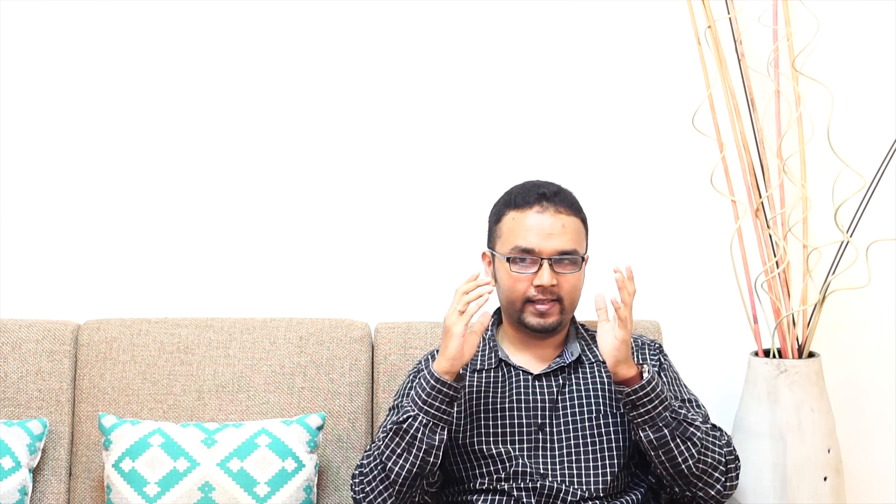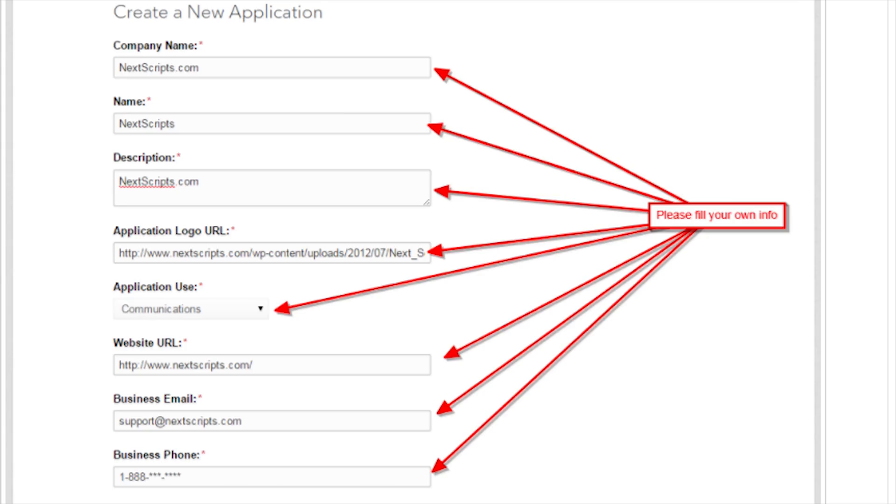So go over to the SNAP settings, click on Add New Network, select LinkedIn, and then open a new tab and go to developers.linkedin.com to create a new app.